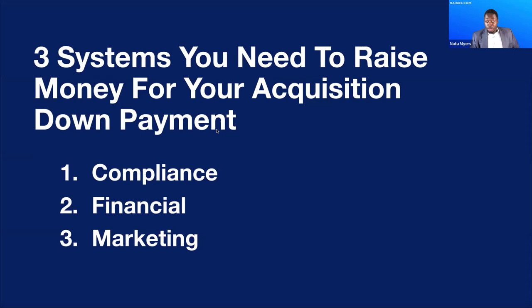What I want to walk through are three systems you need to have in place to raise money for that down payment. As John said, you need to make an offer to the right type of investor — not a VC who will waste your time. So how do we actually get it done? I broke it down into three pieces: compliance systems, financial pieces, and marketing.